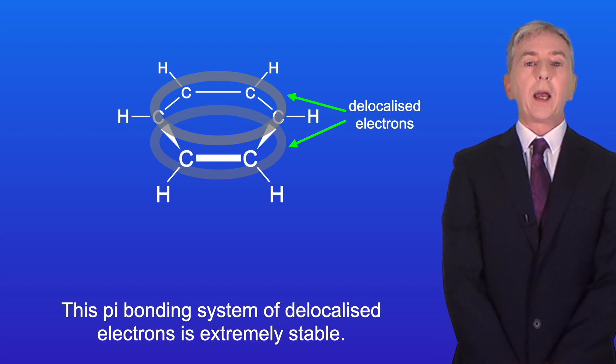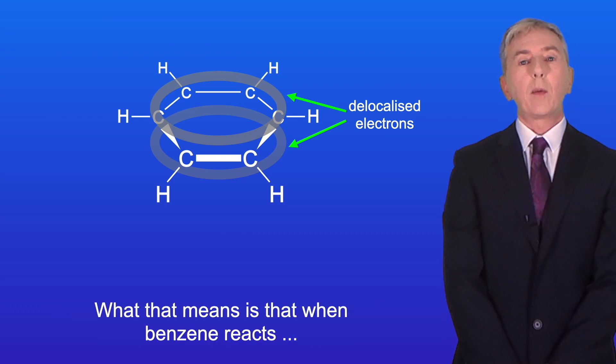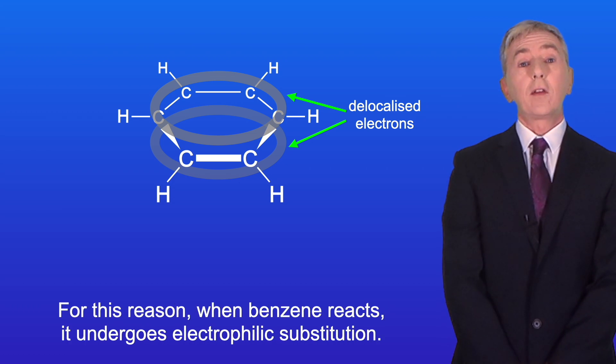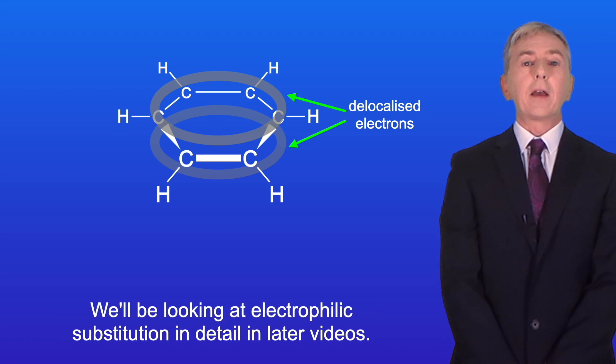Now this pi bonding system of delocalized electrons is extremely stable. What that means is that when benzene reacts, this pi bonding system of delocalized electrons is maintained. And for this reason, when benzene reacts, it undergoes electrophilic substitution. And we'll be looking at electrophilic substitution in detail in later videos.